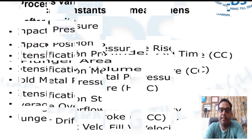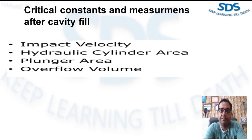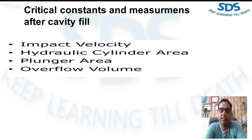To calculate the above parameters at and after cavity fill, several other process variables must be determined. The first is impact velocity, which is the velocity required by the monitoring system to detect the impact pressure, typically between 5 and 12 inches per second. The monitoring system should start at the end of the velocity data array and look backwards to find when this velocity was first exceeded, then look for the peak pressure — identified as the impact pressure — within a window of milliseconds before and after the impact velocity is found.